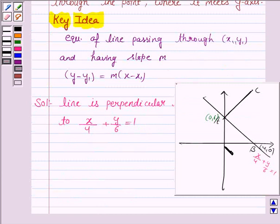That means it cuts the x-axis at point (4, 0) and the y-axis at point (0, 6). We need to find the equation of the line perpendicular to this line where it meets the y-axis. So the line passes through point (0, 6).